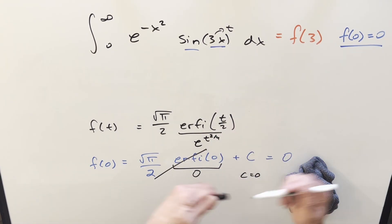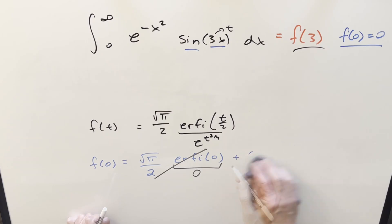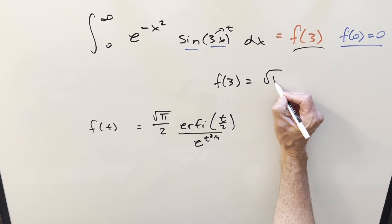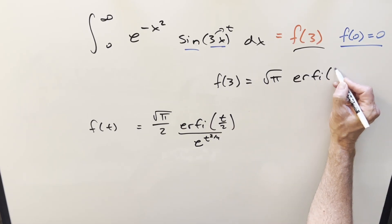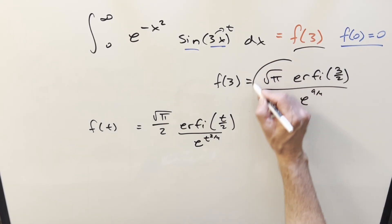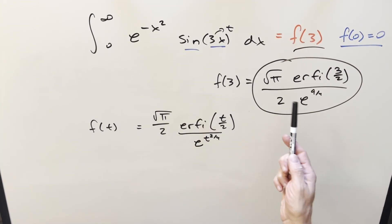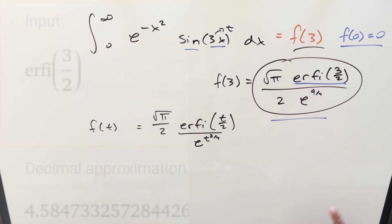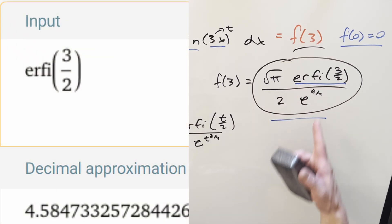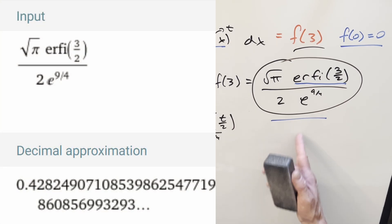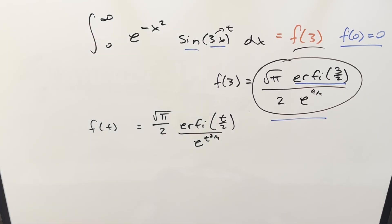Now we evaluate f(3). Plugging in 3: f(3) equals square root of pi over 2 times erfi(3/2) times e to the minus 9/4. This is messier than the cosine version, whose answer was simply square root of pi over 2 times e to some power with no imaginary error function. The exact decimal value would require Wolfram Alpha to compute. Anyway, that's it for today — thanks for watching!